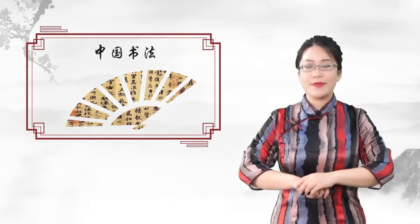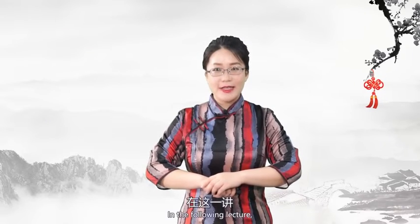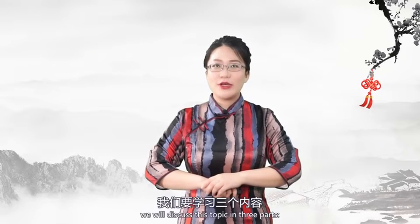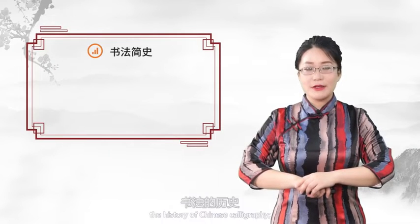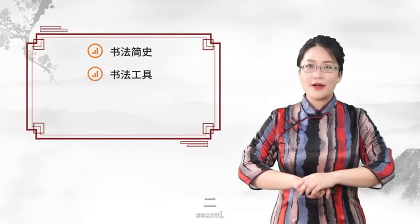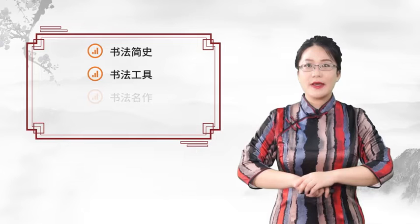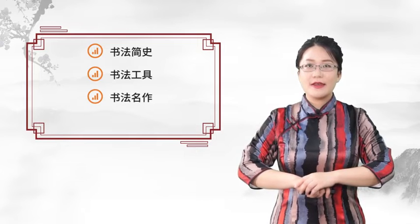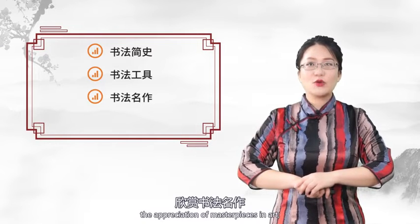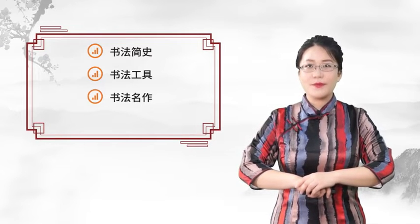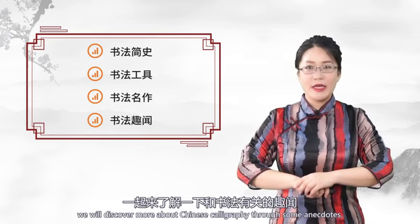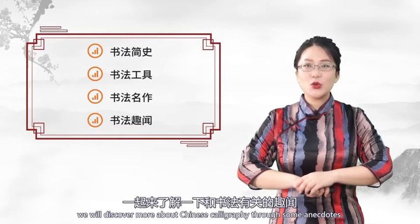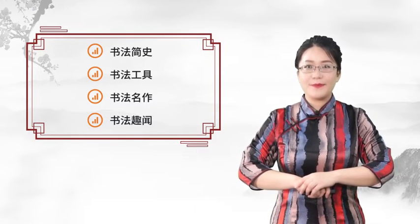大家好，我是唐磊老师，欢迎大家一起来学习《必须了解的中国文化》。这节课我们来学习中国传统艺术——书法。在这一讲，我们要学习三个内容：1. 书法的历史；2. 书法的工具；3. 欣赏书法名作。最后，我们一起来了解一下和书法有关的趣文。